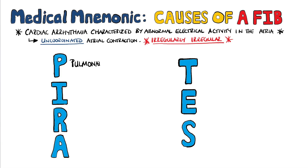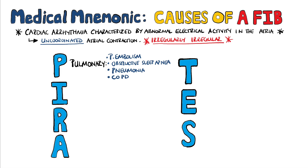P stands for pulmonary related causes like pulmonary embolism, obstructive sleep apnea, pneumonia, and COPD. Obstructive sleep apnea is closely linked to cardiovascular disease; the hypothesis is that it leads to atrial dilation and remodelling, which can cause AFib. Pneumonia can cause AFib due to cytokine mediated vasoconstriction, leading to ischemia in the atrium.